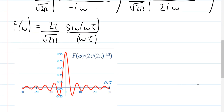We're not asked to sketch the function in this question, but it's always good practice to think about what it looks like. Here's a plot of the function. We can see the oscillations from the sine function, heavily damped as we go away from the origin by the ωτ term in the denominator, with the function well behaved at the origin. Because both the sine term and the ωτ term are odd functions, their combination gives an even function — we can see the function has mirror symmetry about the y-axis.